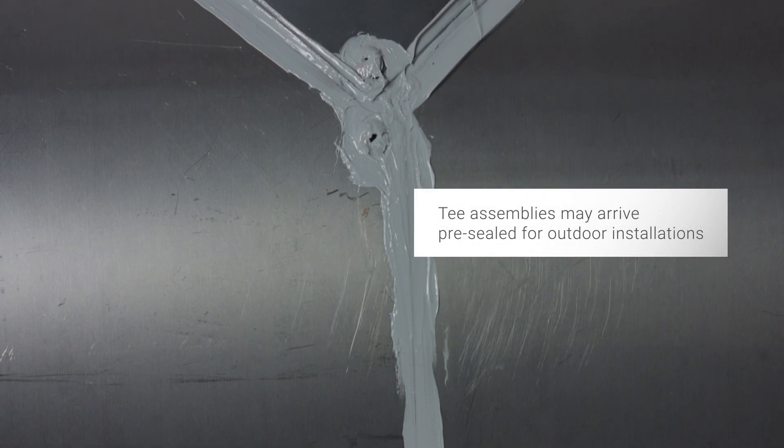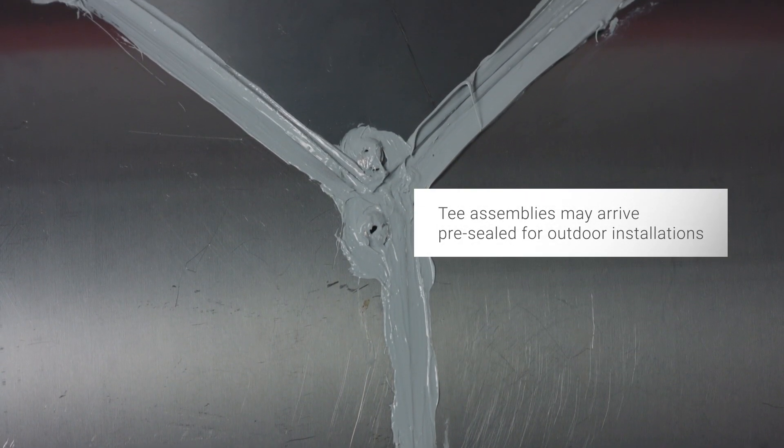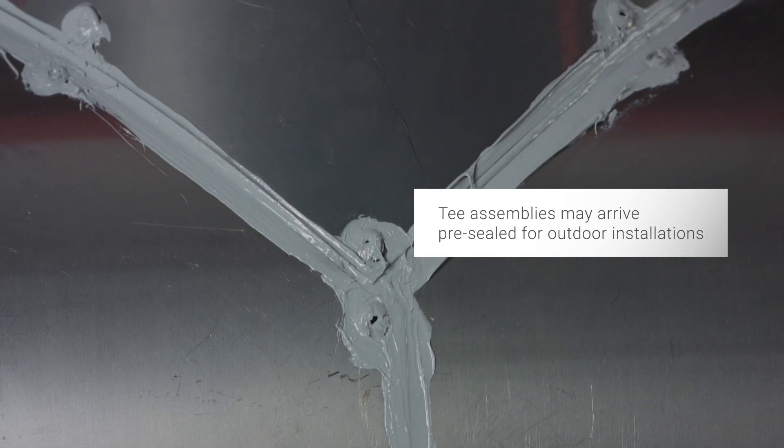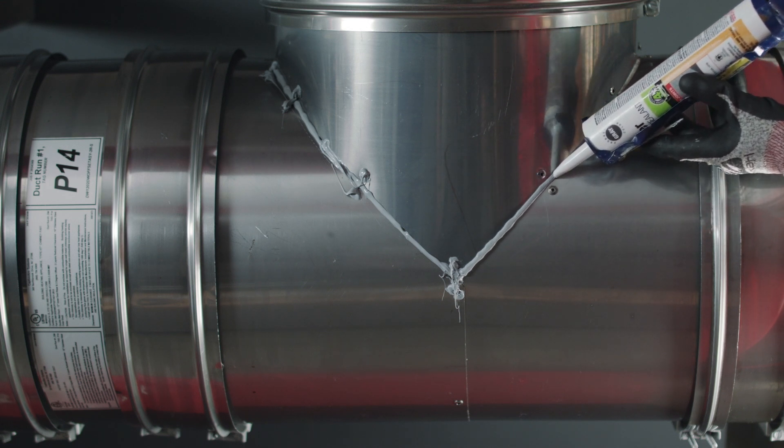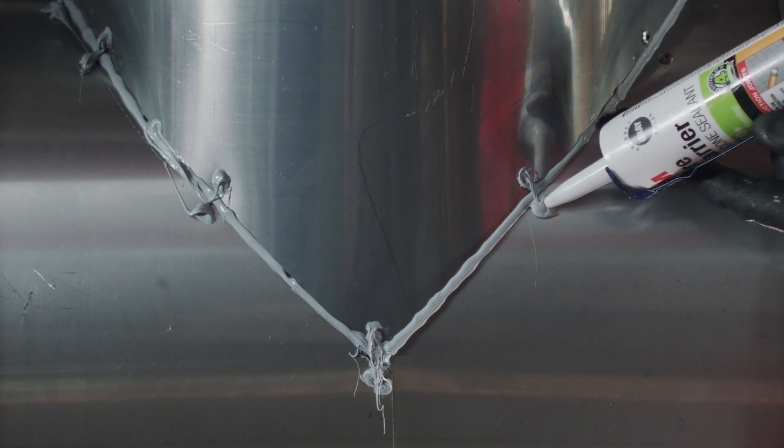In some cases, the T-assembly will arrive pre-sealed from the factory for use in outdoor installations. If this is not the case, you must seal all the seams that form the T-assembly, as well as all the rivet heads as shown.